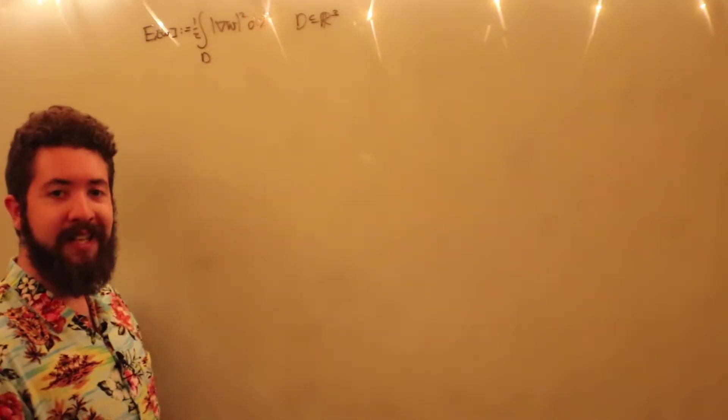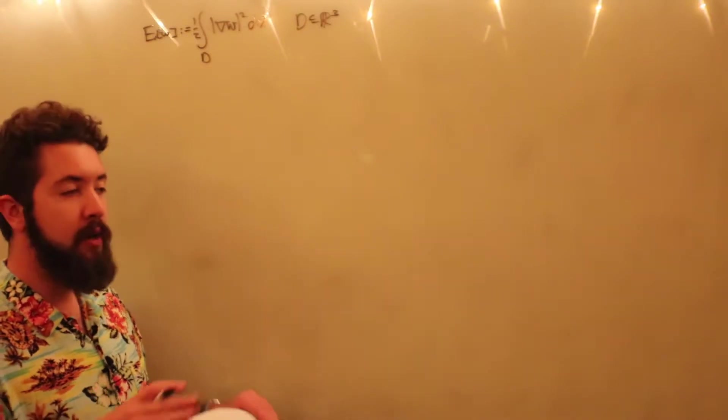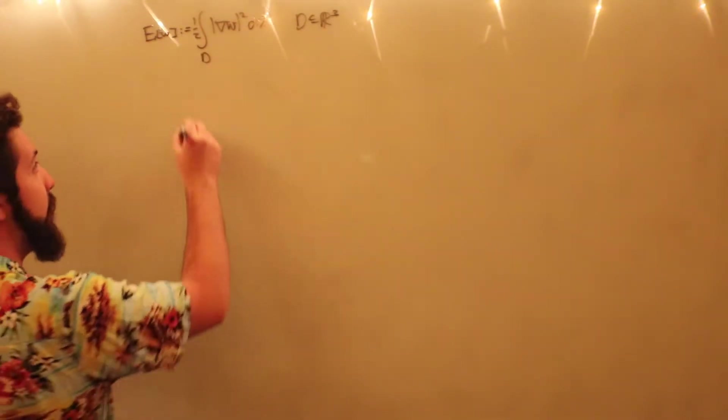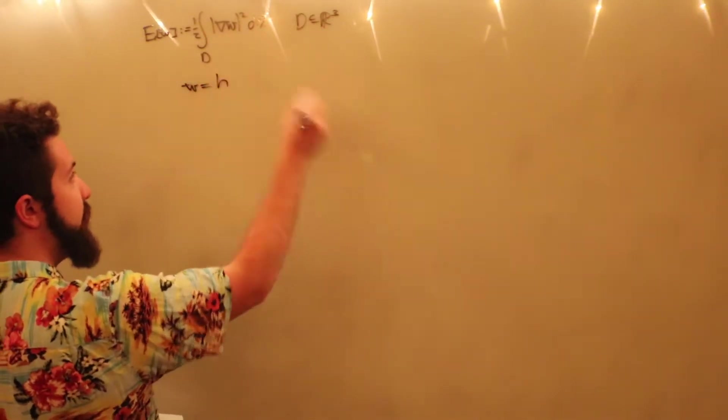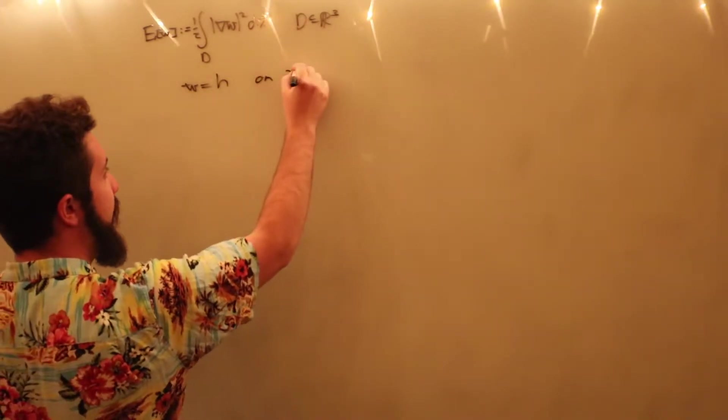Namely, we're going to assume that it takes some value, some prescribed set of values, on the boundary of this domain, d. So, w is equal to, we'll just say, a function h, whatever we want it to be, it's a boundary condition, on boundary d.